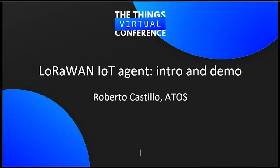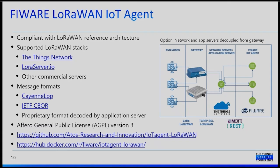Thank you for joining us today. My name is Roberto Castillo. I work in the area of IoT technology at Atos. Currently, I am involved in the technical management of the Urban Data Platform of Atos. Today, I am going to talk about the FIWARE LoRaWAN IoT agent. I will show you how to connect LoRaWAN end nodes to this IoT agent. To perform this, we will use The Things Network platform. The FIWARE LoRaWAN IoT agent is fully compliant with the LoRaWAN reference architecture, providing interoperability between FIWARE NGSI Context Brokers and LoRaWAN devices.